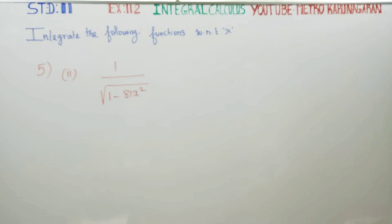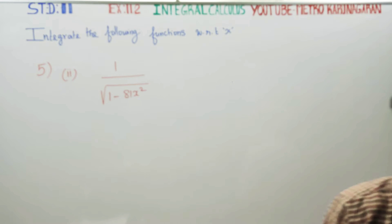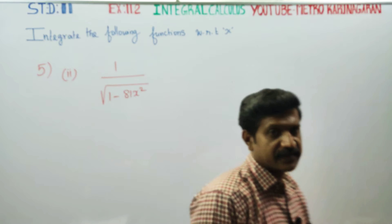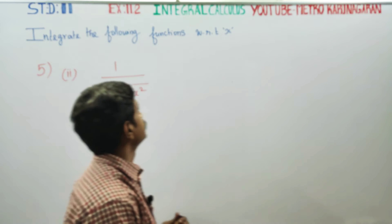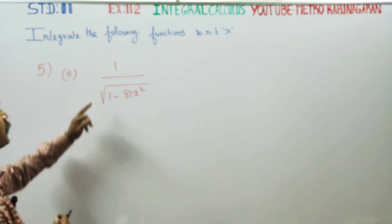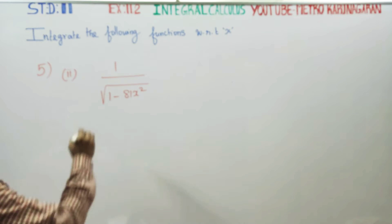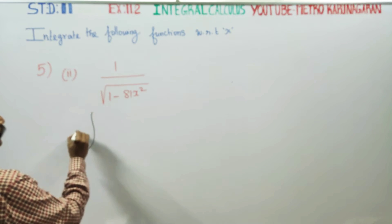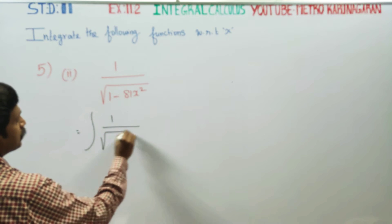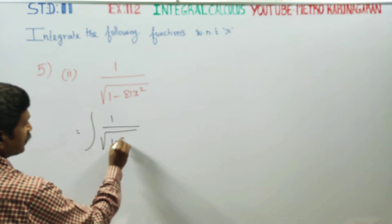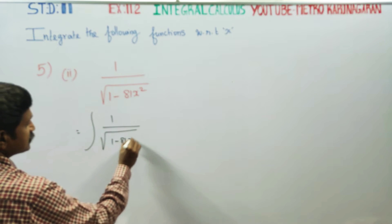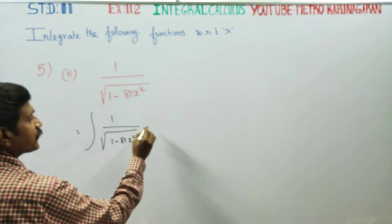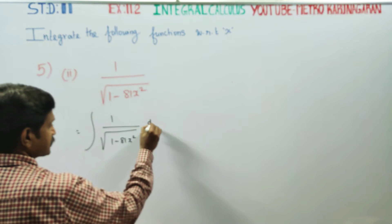Dear students, in exercise number 11.2, sum number 5, second subdivision, you have to integrate 1 by square root of 1 minus 81x squared dx.